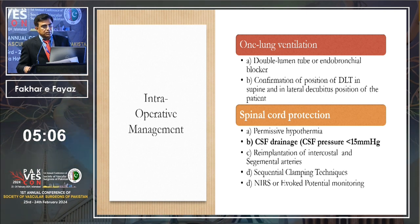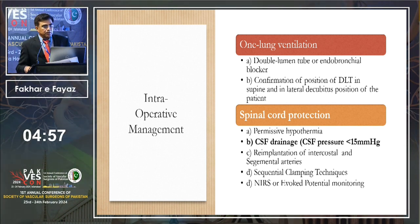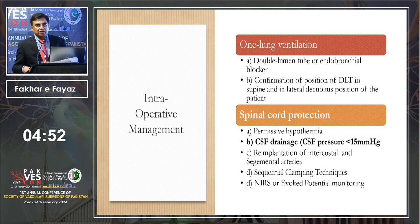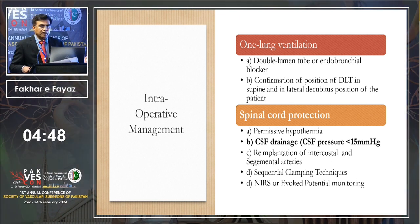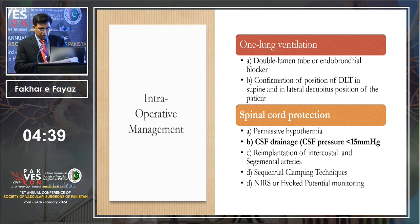The most important thing is spinal cord protection. This involves: permissive hypothermia, CSF drainage, re-implantation of intercostal and segmental arteries, and sequential clamping technique. Monitoring whether distal perfusion is working and calculating ischemic time is performed throughout.